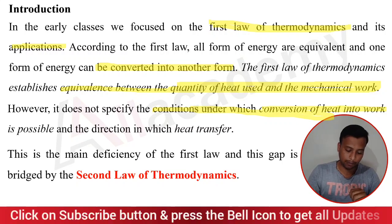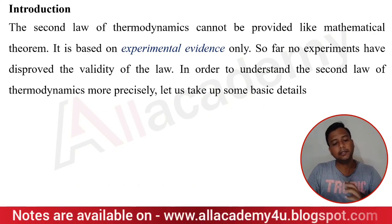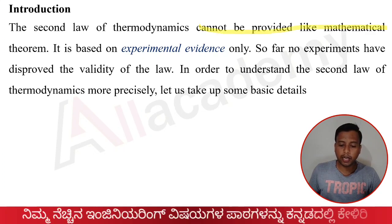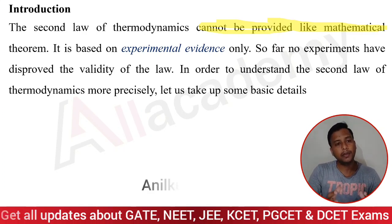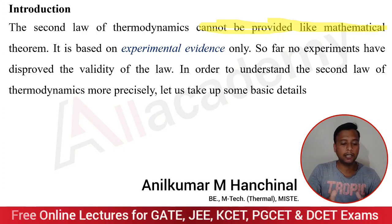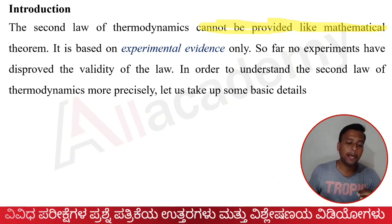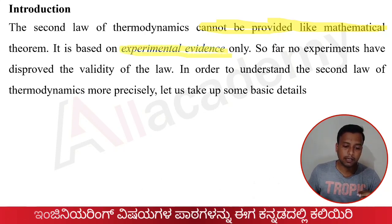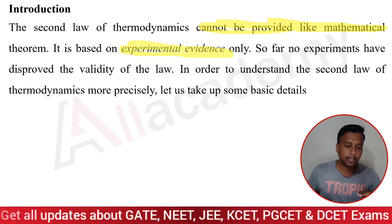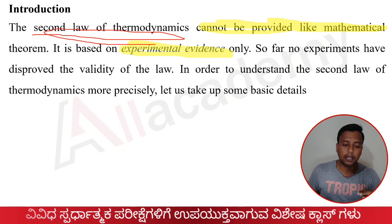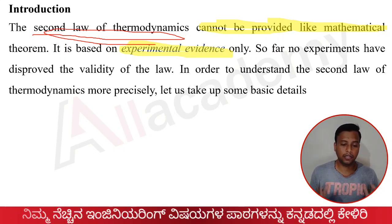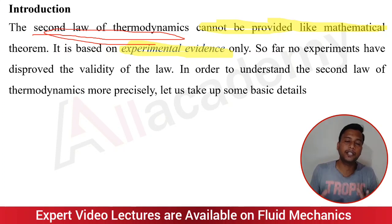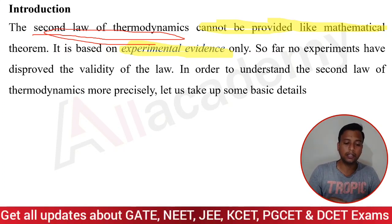The second law of thermodynamics, which overcomes these drawbacks, cannot be proved mathematically, unlike other thermodynamic theorems. This is because it is purely based on experimental evidence. Whatever second law we are discussing, it is completely based on experimental evidences. So far, no experiments have disproved the validity of the second law — there is no experiment which has shown this law to be incorrect.